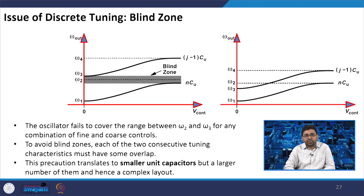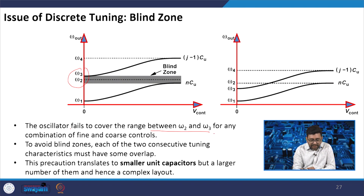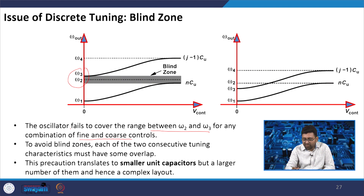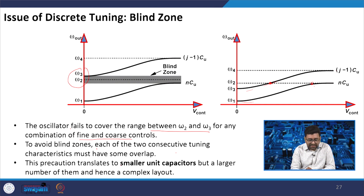The issue with discrete tuning is the blind zone, where the oscillator fails to cover the frequency range between omega_2 and omega_3 for any combination of fine or coarse control. To avoid the blind zone, each pair of consecutive tuning characteristics must overlap, so that the same frequency can be reached at two different coarse settings. This precaution translates to a smaller unit capacitor but requires a larger number of them, increasing layout complexity.